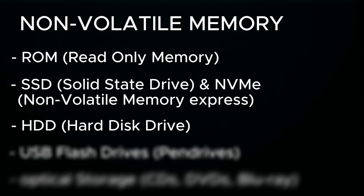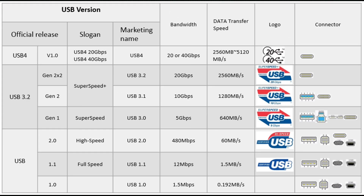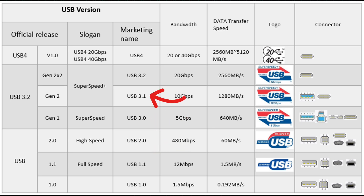Next: USB flash drives, or simply pen drives. They use a principle similar to SSDs — NAND Flash. However, the speed is determined by the USB standard — for example 2.0, 3.0, or 3.1. The higher the version number, the faster data can flow.